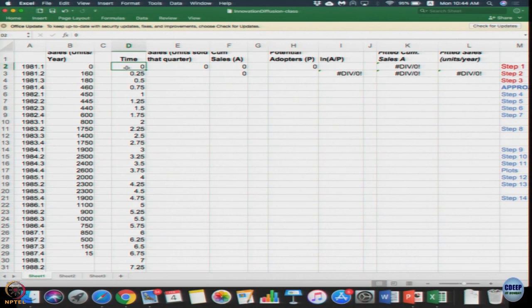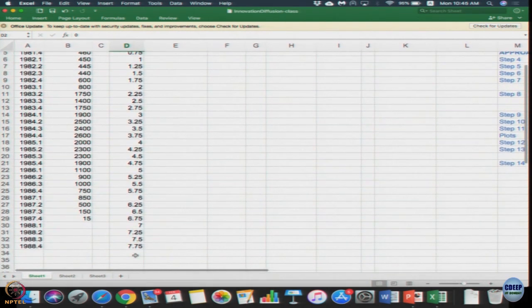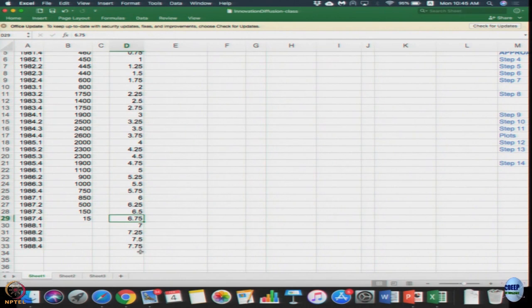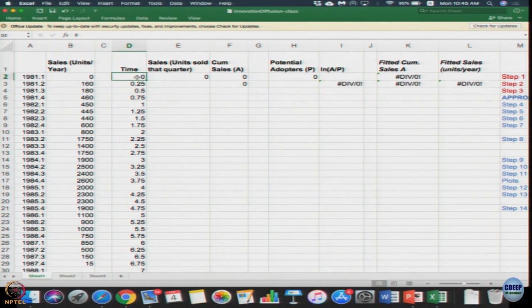First thing we are doing is the actual sales data gives which year and which quarter and things like that. For computation simulation purposes, we can reset the scale to 0. The time starts at 0, and then since it is every quarter we can just make it 0.25, 0.5, 0.75, 1 and so on, and that is what the reset time column is. Though we have data only until 1987.4, we are just extending it for few more data points which is fine. All we have done here is reset the time starting at 0.